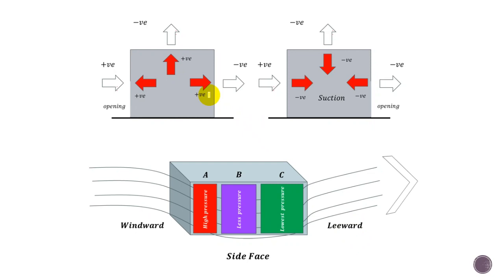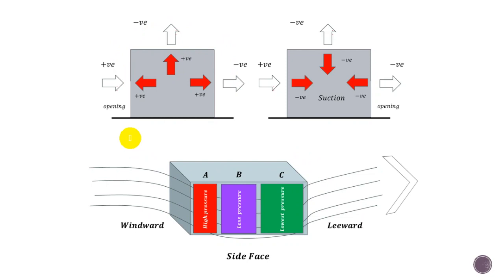The external pressure doesn't just go from windward to roof to leeward — it also acts on the side face of the building, which is similar to the roof. The side face is divided into areas, each with different pressures called local areas. The wind creates maximum pressure (usually negative) at one zone, then lower values in subsequent zones. It may be divided into two or three areas depending on certain parameters. We also talked about internal pressure.